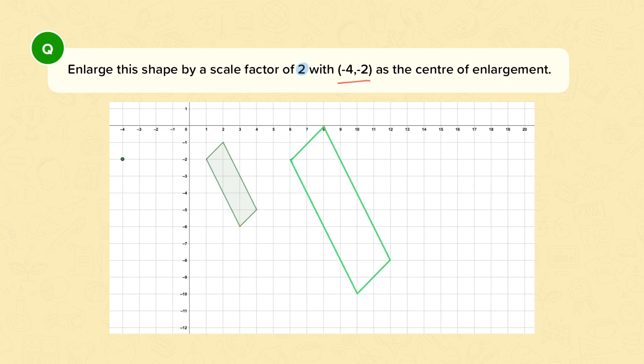Final thing to do is to check with our ray lines coming from the centre. So we go through here, here, here and here. And as we can see, they match up perfectly. If you want to measure the distances, that's another way of checking your answer.